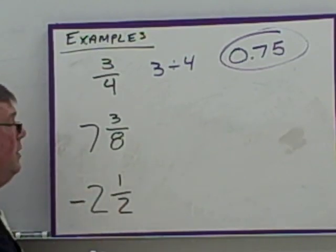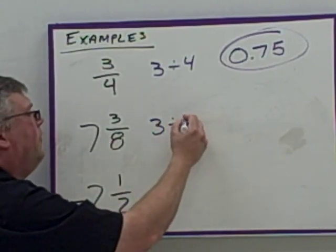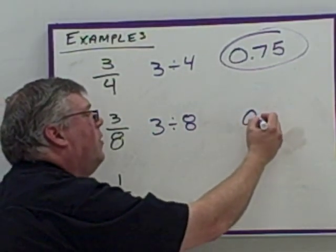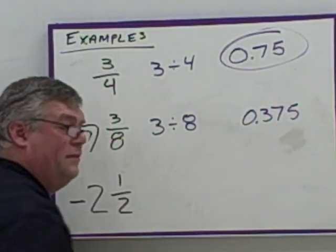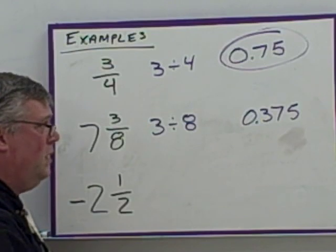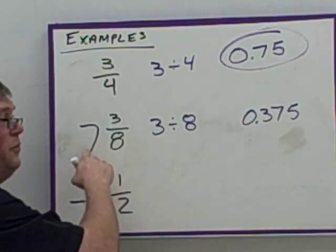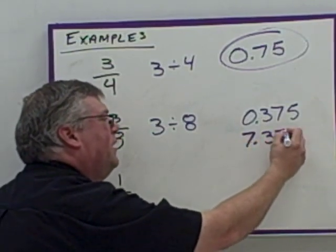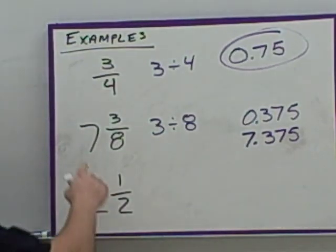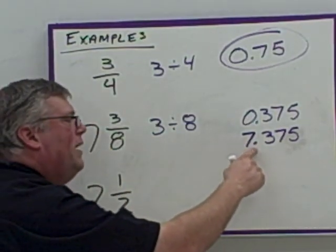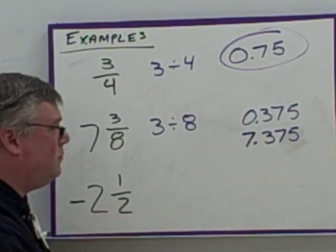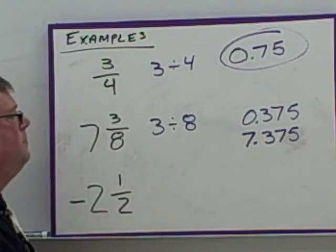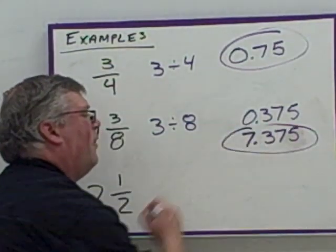Here we've got a mixed number, so we're going to do 3 divided by 8, converting the fraction part only. 3 divided by 8 gives me 0.375. We can do that in the calculator. But we have the 7 in front, so we tack that onto the front, which means this becomes 7.375 — 7 and 3 eighths equals 7.375, or 7 and 375 thousandths. That's our final answer.